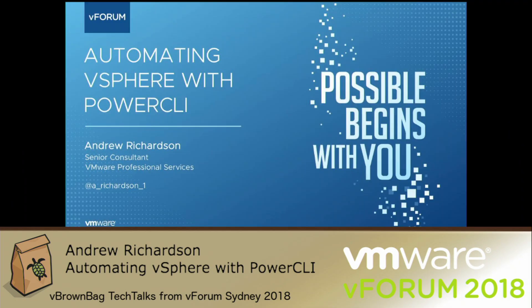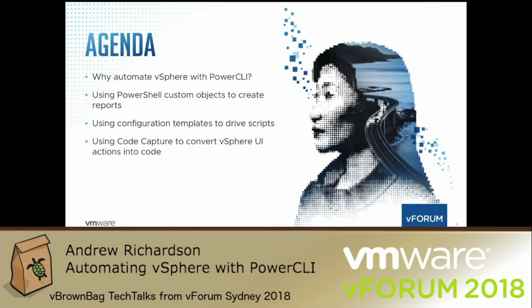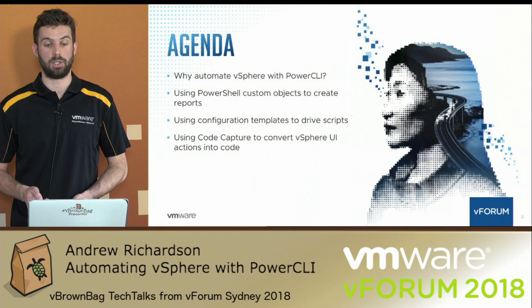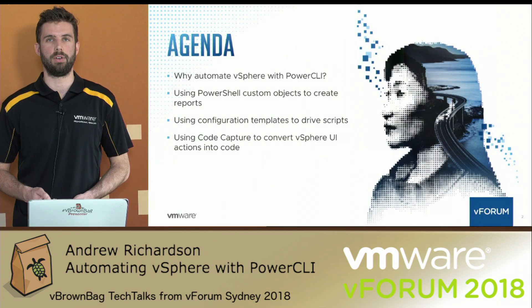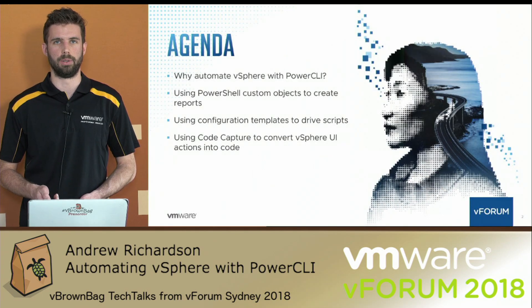Let's jump in and have a look at the agenda. Today we're going to cover off firstly why automate with PowerCLI. Then we're going to look at using PowerShell custom objects to create reports with PowerCLI. We're going to look at using configuration templates to drive scripts, and then lastly we're going to have a quick look at using Code Capture to convert vSphere UI actions into code.